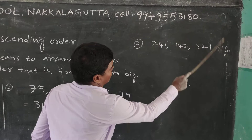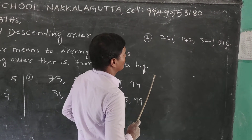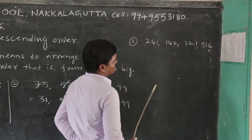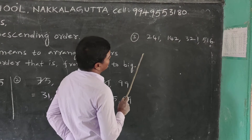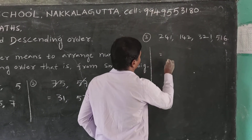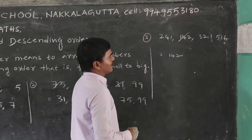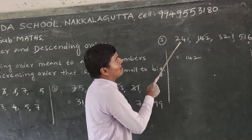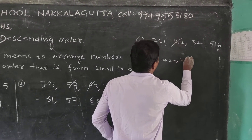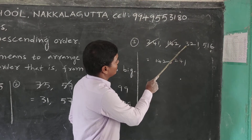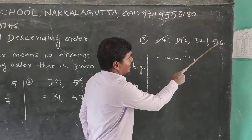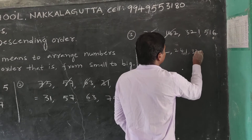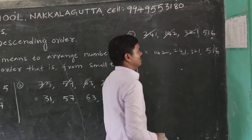All three-digit numbers. First, find the smallest number — it is 142. Cancel 142. Next, compare the hundreds places: 200, 300, and 500. 200 is smaller than 300, so 241 comes next. Then compare 321 and 560 — 321 is smaller. So the ascending order is: 142, 241, 321, 560.